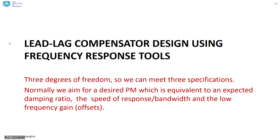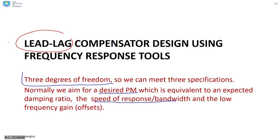Finally, let's look at lead-lag compensation. The lag compensator didn't give us any control over bandwidth, and the lead compensator didn't give us any control over low frequency gain — because both only had two degrees of freedom. But combining lead and lag gives three degrees of freedom, so we can meet three specifications: a desired phase margin, a desired speed of response or bandwidth, and a desired low frequency gain.